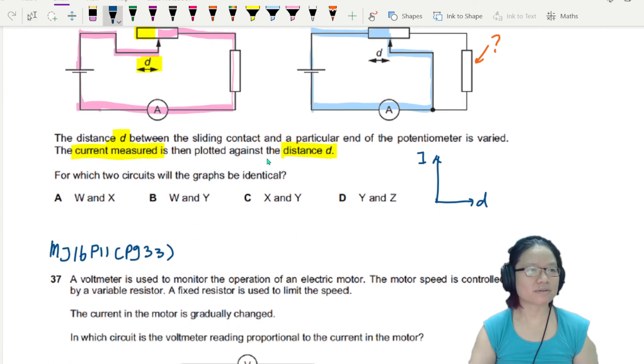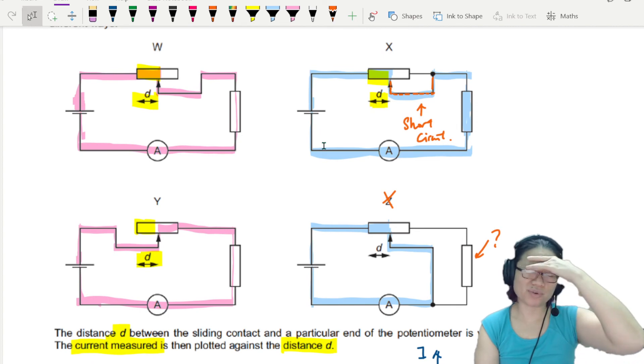So the answer is W and X. W and X. So what we are looking at is, do the current follow the same journey? And W and X is where the current follows the same journey.